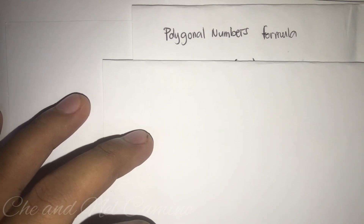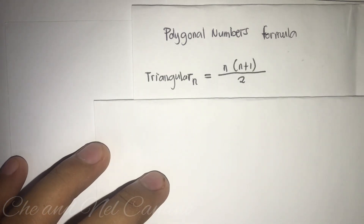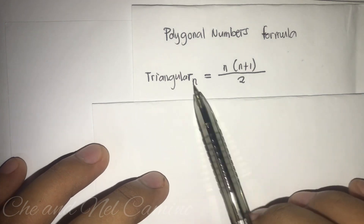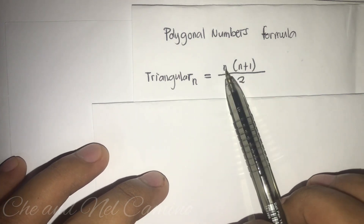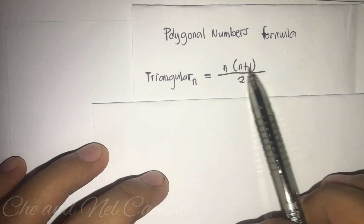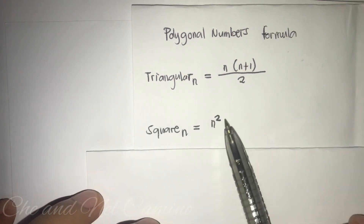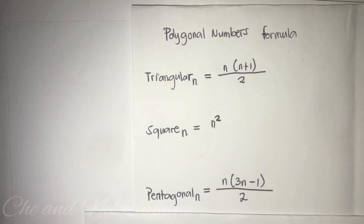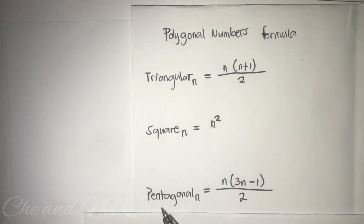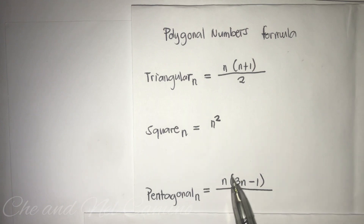Good day. In this video I am going to teach you how to find the total number of dots of polygonal numbers using the polygonal numbers formula. The first formula is: Triangular(n) is equal to n times the quantity of n plus one, all over two. The second one is: Square(n) is equal to n to the power of two. The third one is: Pentagonal(n) is equal to n times the quantity of three n minus one, all over two.